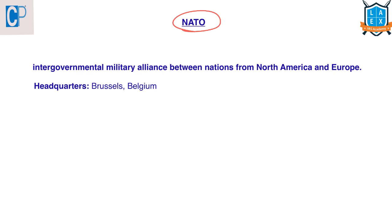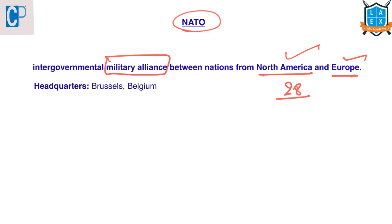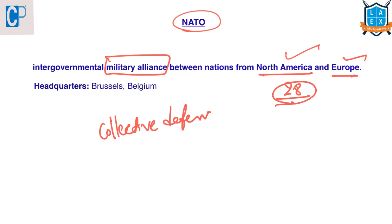NATO stands for North Atlantic Treaty Organization. It is an intergovernmental military alliance between nations from North America and Europe, consisting of 28 independent member countries. It is based on a system of collective defense — meaning if any member is attacked by an external party, all members agree to provide mutual defense in response. NATO's headquarters is in Brussels, Belgium.